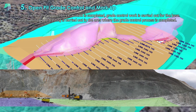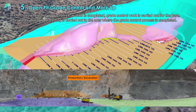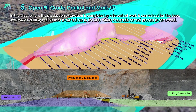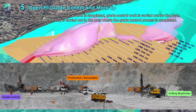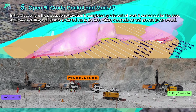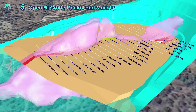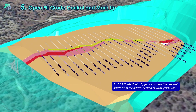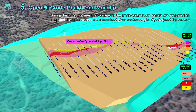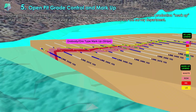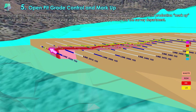In the slices where the production excavation is completed, grade control work is carried out for the base. Afterwards, drilling and blasting is carried out in the area where the grade control process is completed.